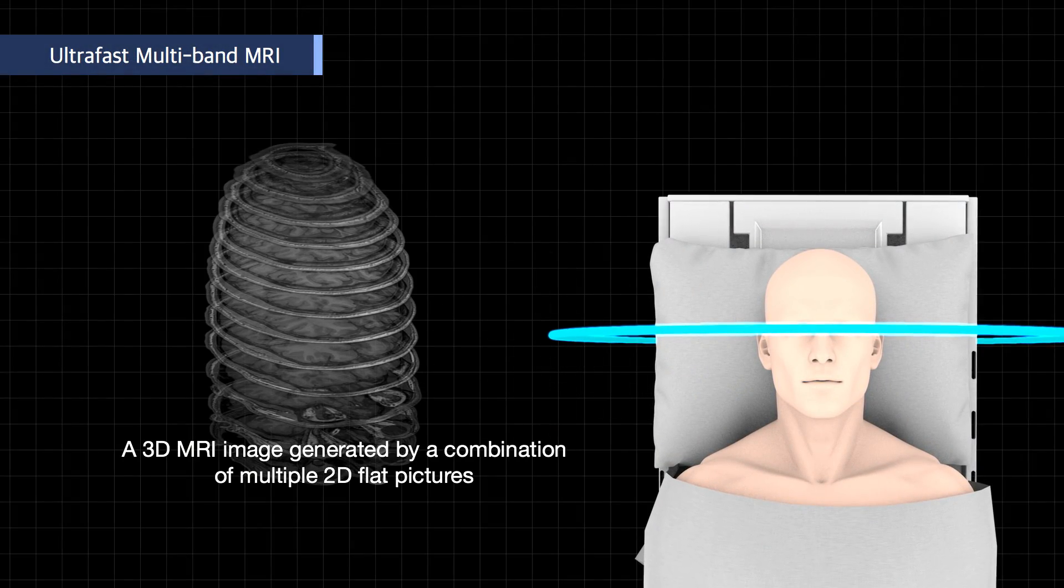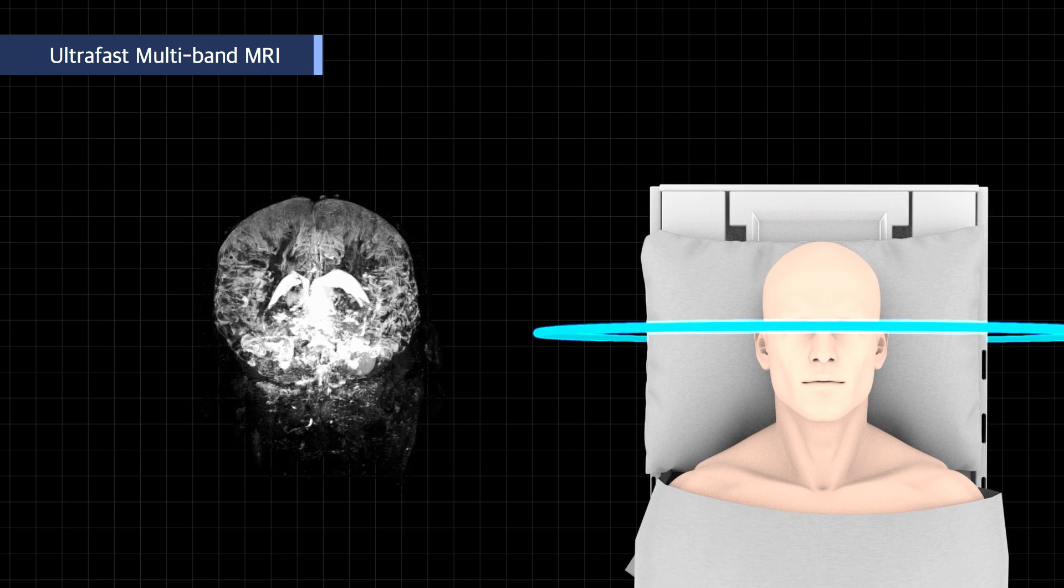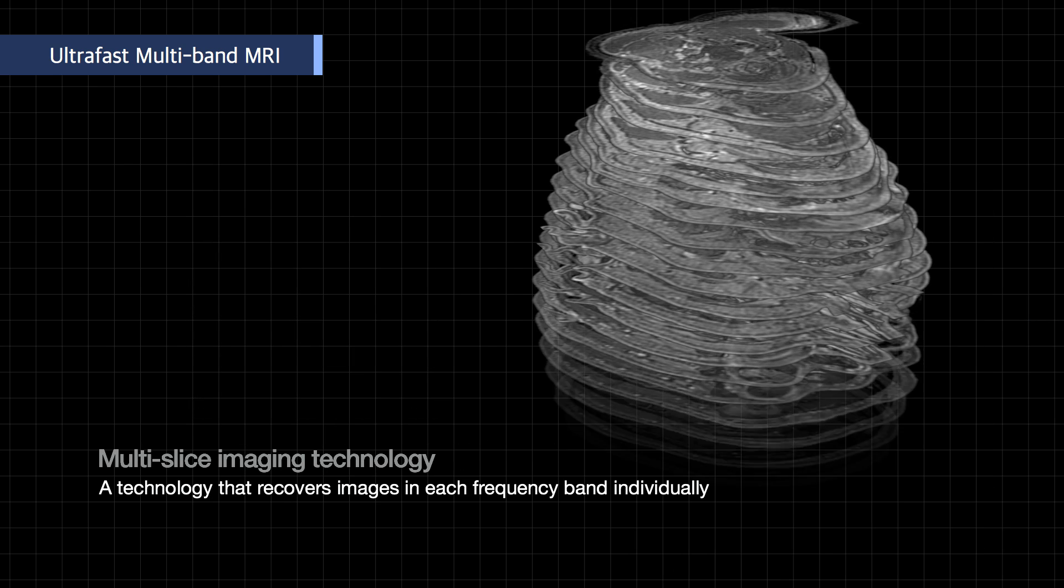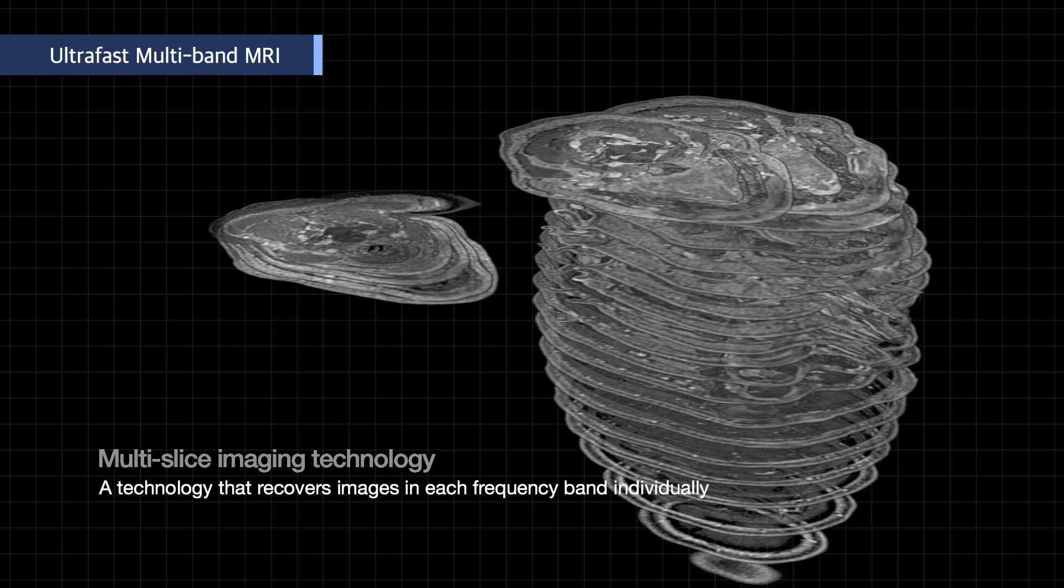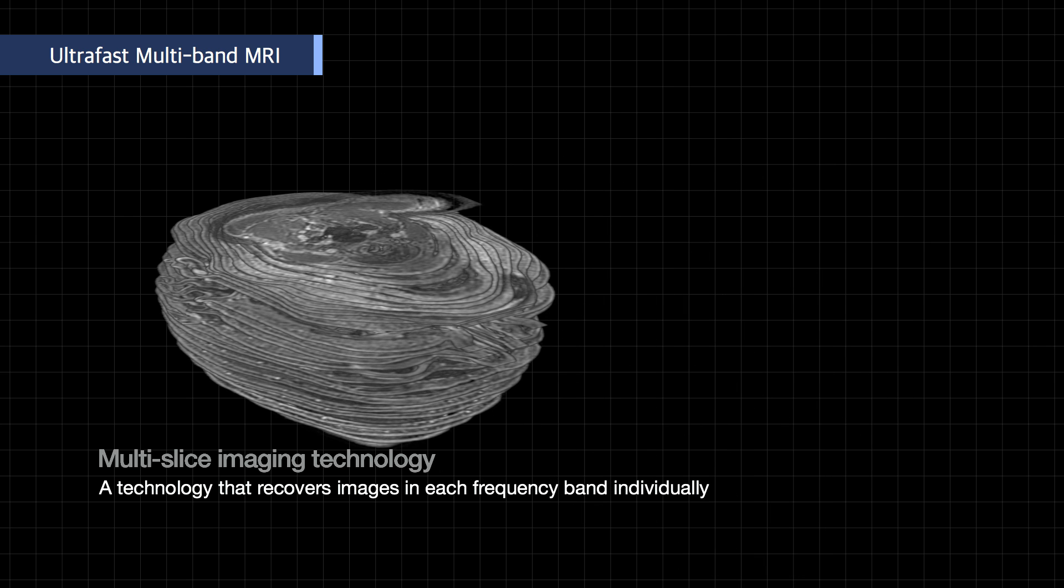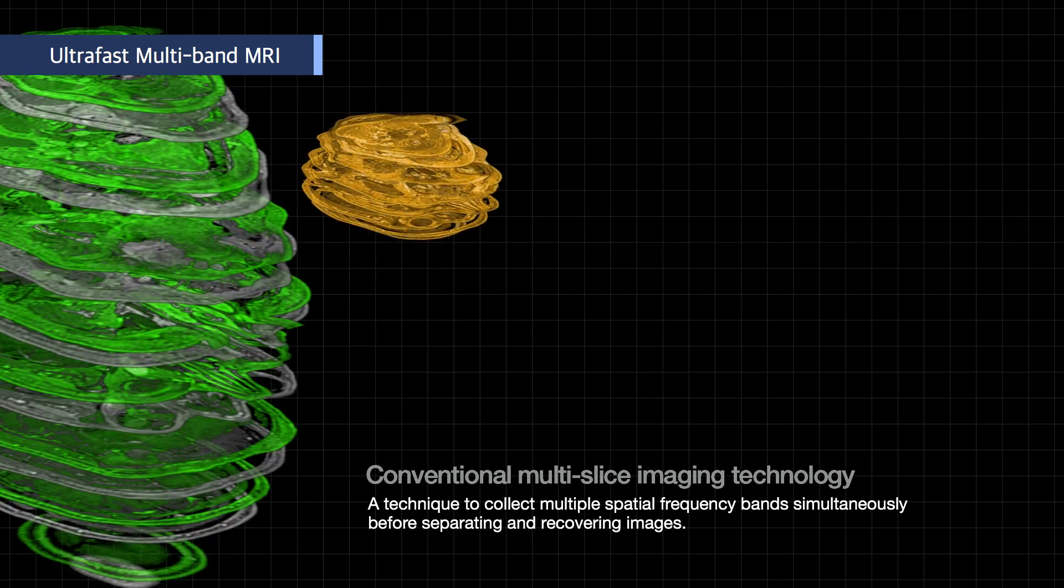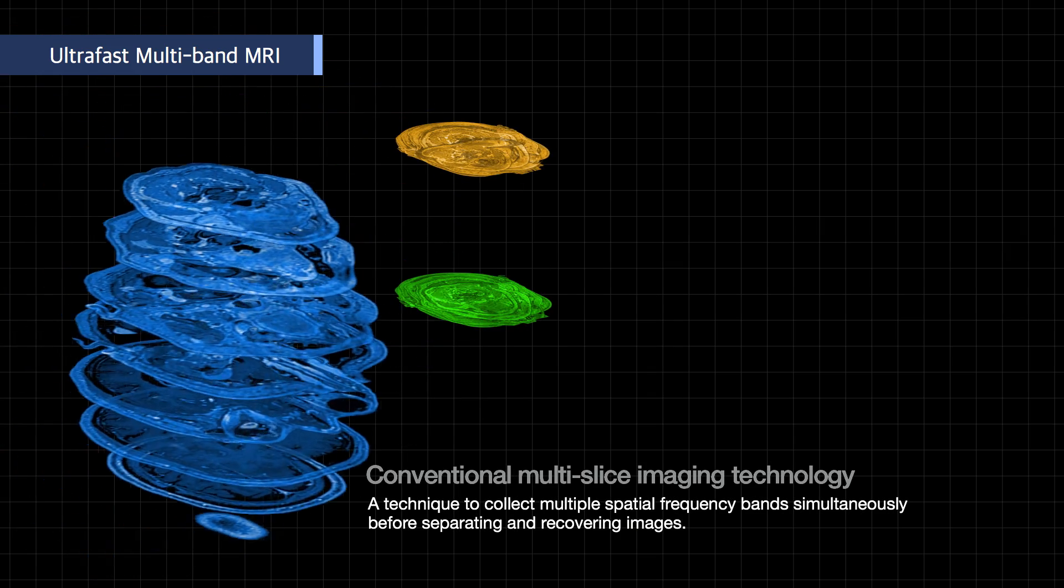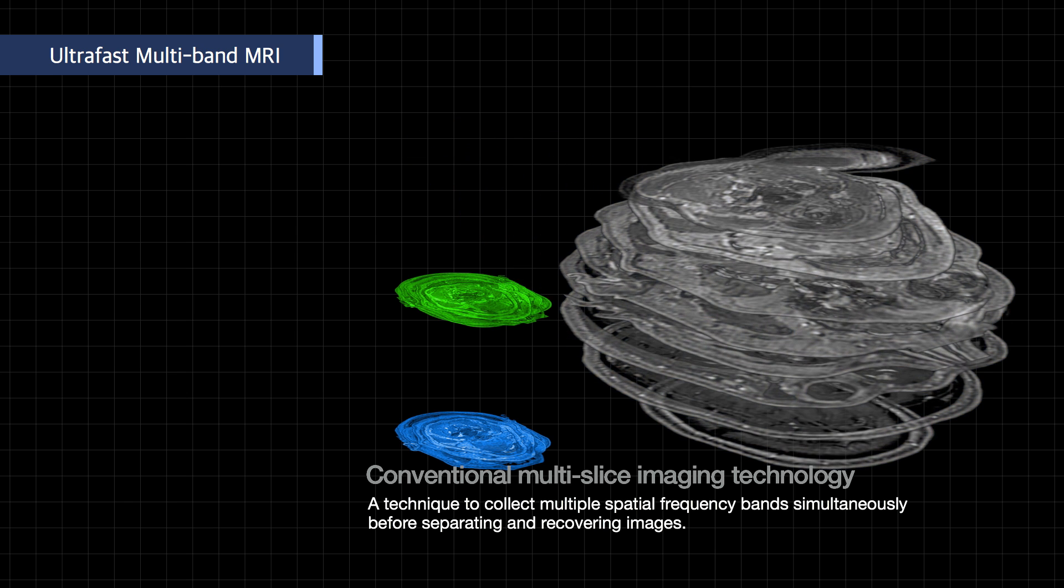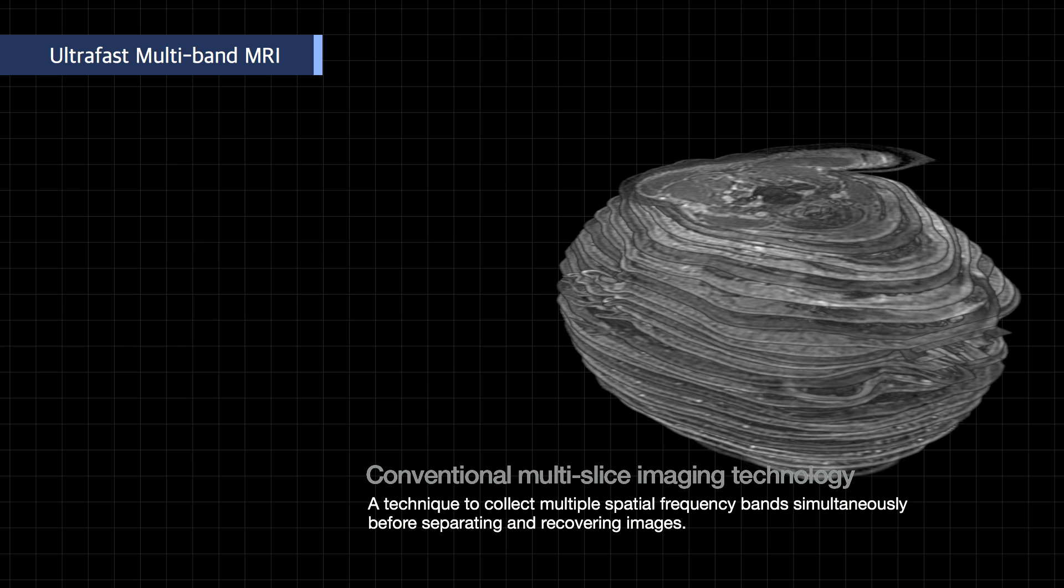A 3D MRI image is generated by combining multiple 2D flat pictures. Conventional multi-slice imaging technology used for this process basically recovers images in each frequency band individually. This technique was further enhanced in simultaneous multi-slice imaging technology such that it collects multiple spatial frequency bands simultaneously before separating and recovering images.